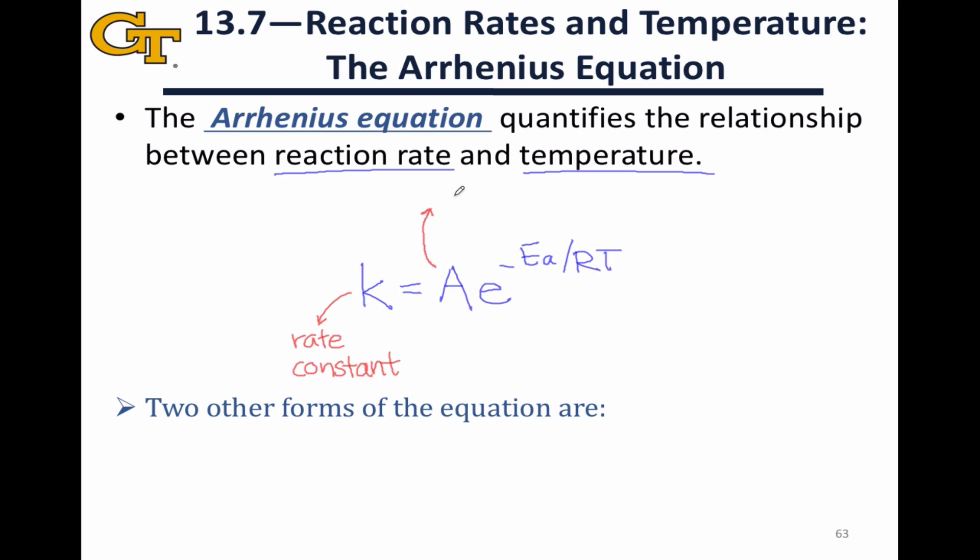A is called the frequency factor, and we're going to revisit why it has this name after talking about the other components of this equation. Ea is an energy value called the activation energy. This is the energy difference between the reactants and the transition state, the maximum of energy along the reaction path.